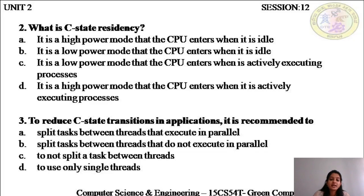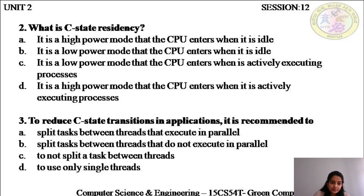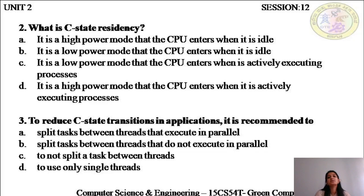To reduce C state transitions in applications, it is recommended to split tasks between threads that execute in parallel. If you use single threads, it won't result in data efficiency or save power. So you have to use multithreading. But to reduce C state transitions, you need to multithread in such a way that processes can execute independently — there shouldn't be any inter-process communication which raises an interrupt. C state transition is the process of moving between active and idle mode. You cannot keep getting the process out of idle mode to execute a process and push it back — this consumes a lot of energy. Such transitions need to be minimized. So A is the right answer: split tasks and ensure threads execute in parallel without inter-process communication.